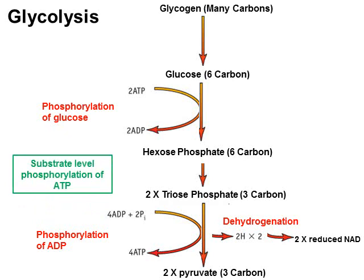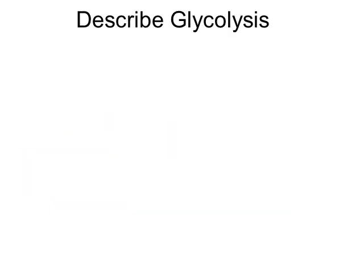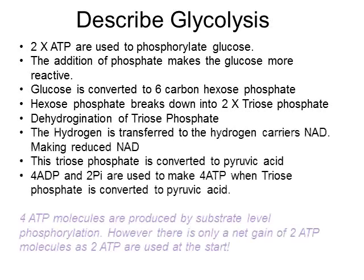A little quiz: can you spot the substrate level phosphorylation of ATP? It's where we're making ATP by taking a phosphate from a substrate — specifically the triphosphate conversion to pyruvate, with the phosphate being removed and added to ADP to produce ATP. Pause the video and have a go at describing glycolysis. Here's the answer — pause and write it down if you like.